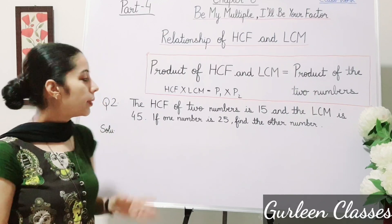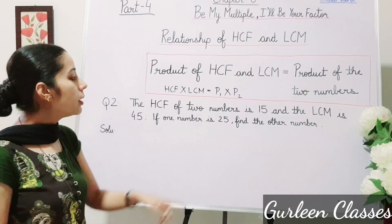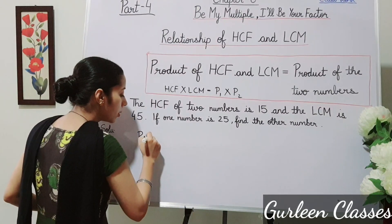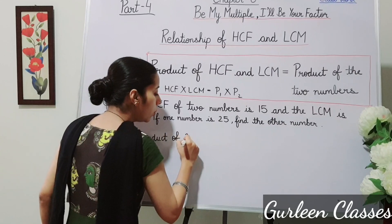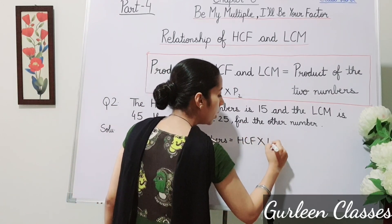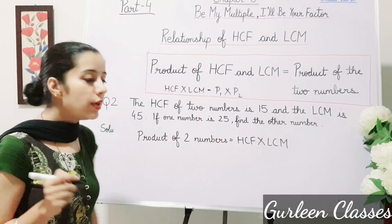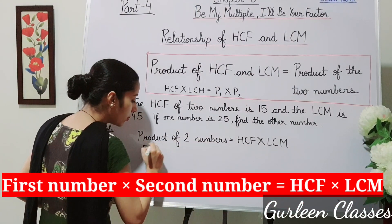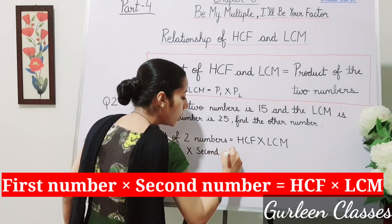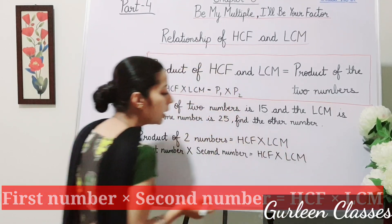Question number 2: The HCF of two numbers is 15 and the LCM is 45. If one number is 25, find the other number. First, write the relation: product of two numbers is equal to HCF into LCM. So we write: first number into second number is equal to HCF into LCM.